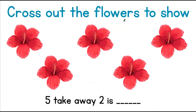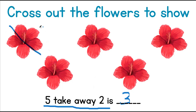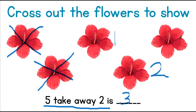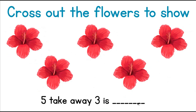Cross out flowers to show 5 take away 2 is 3. Here we have 5 flowers. Let's take away 2 — we are going to cross them out and count how many are left. We have 1, 2, and 3. That means 5 take away 2 is 3.